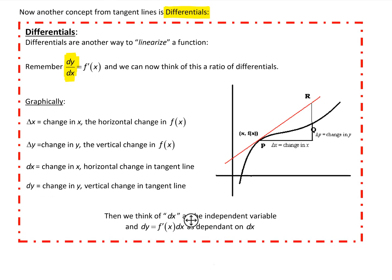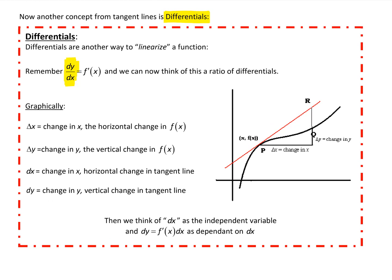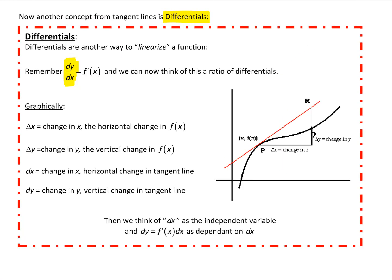Delta x is the change in x. On the graph over here on the right, we have the curve y equals f of x in black and the red line is our tangent line — the tangent at a specific point. We start at point p and look at another point on the curve.